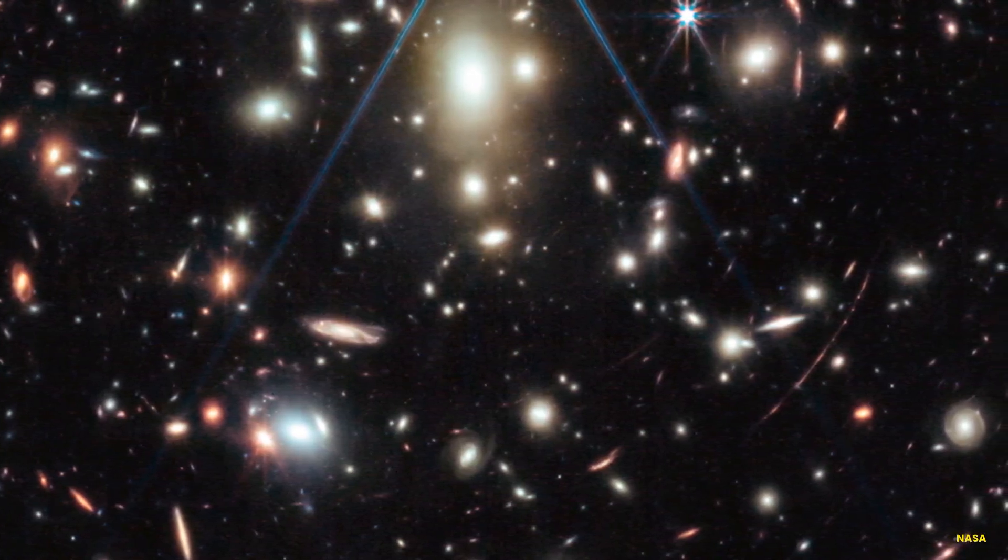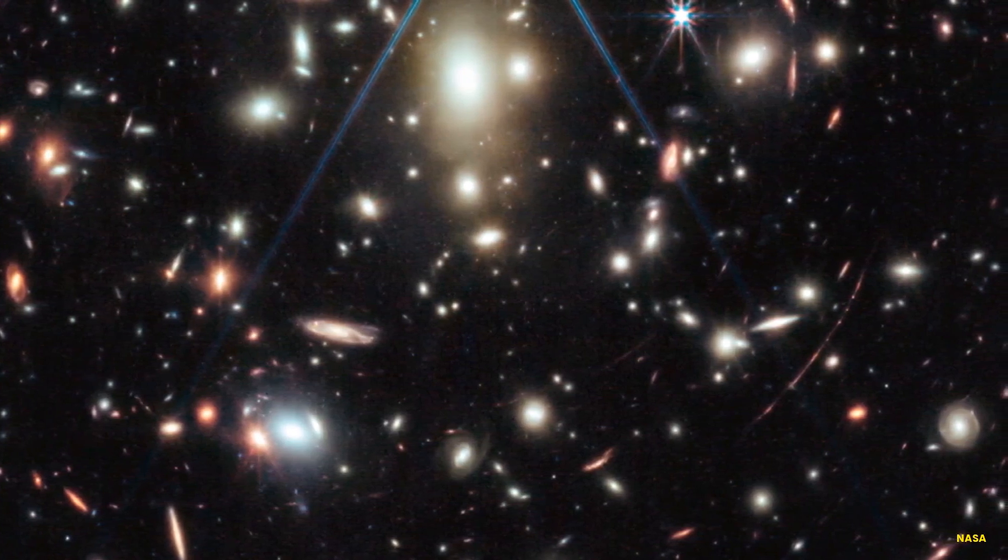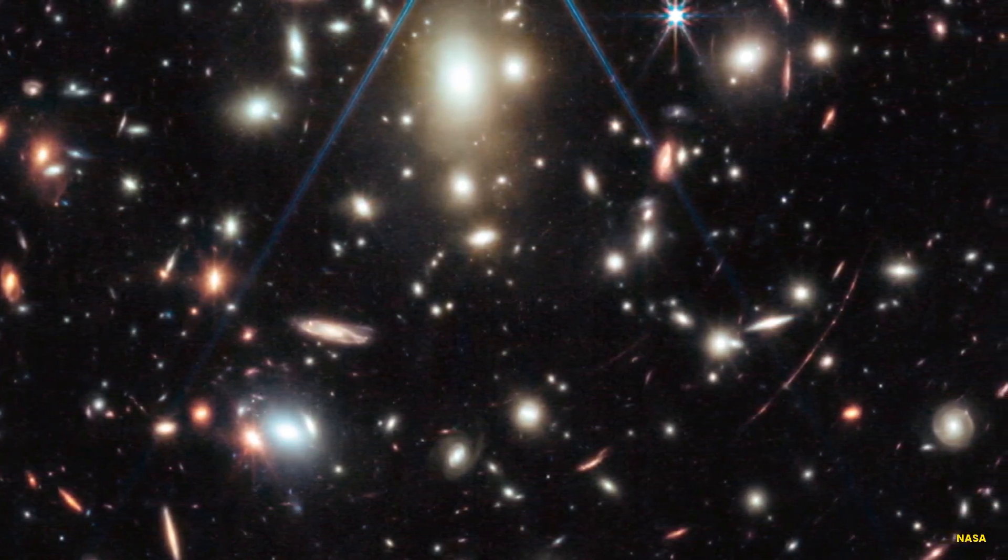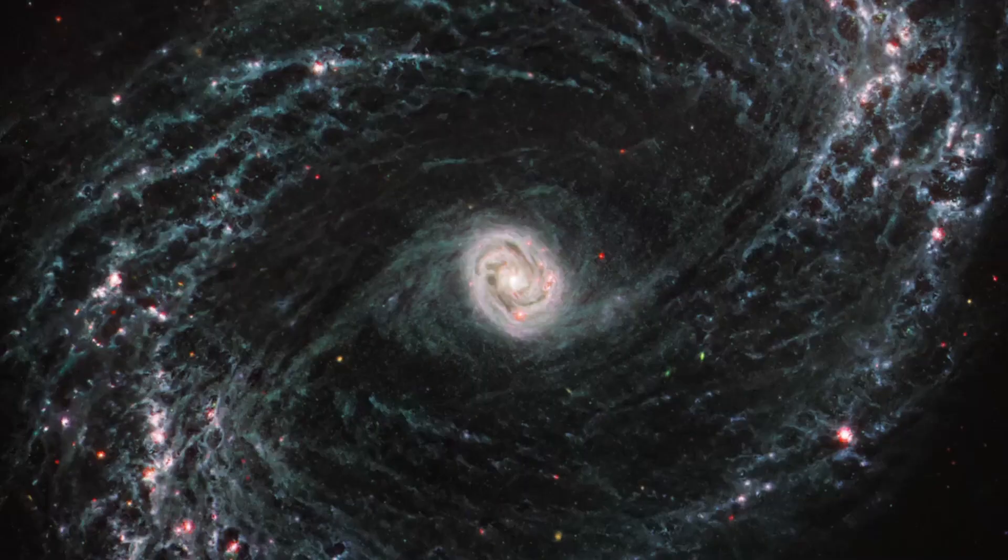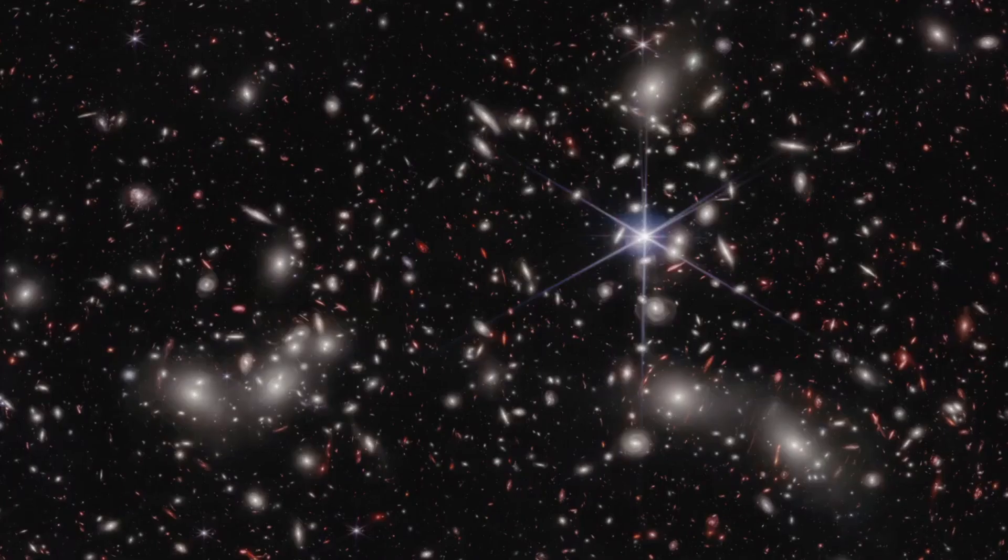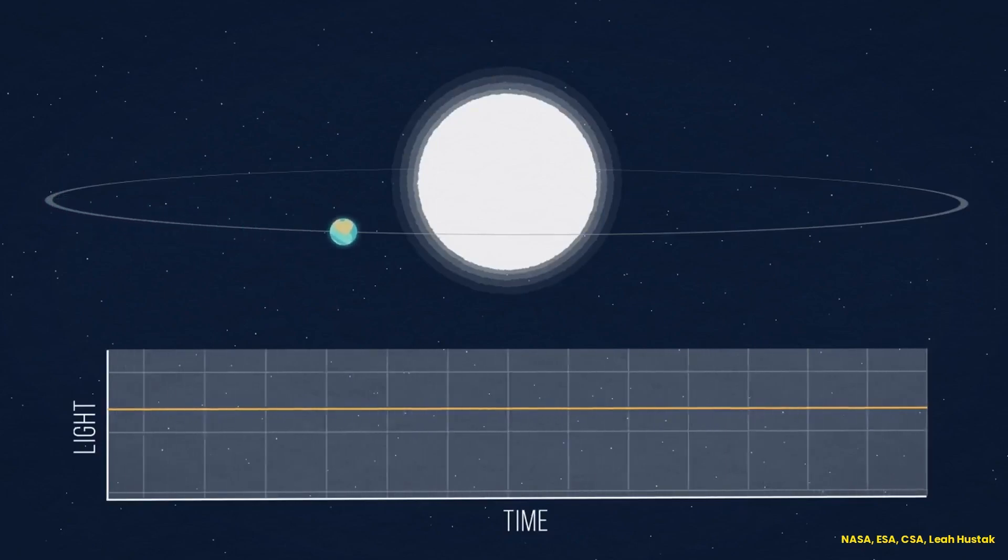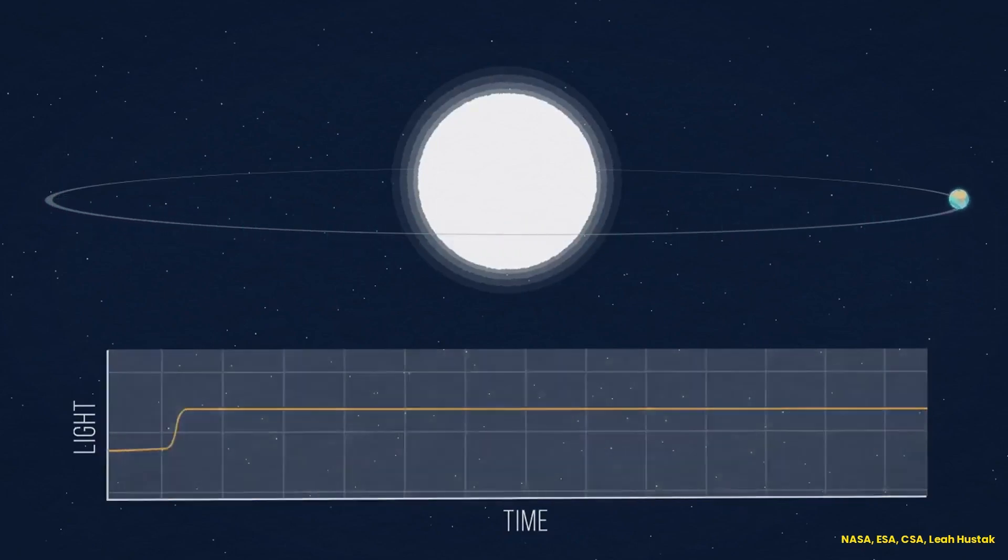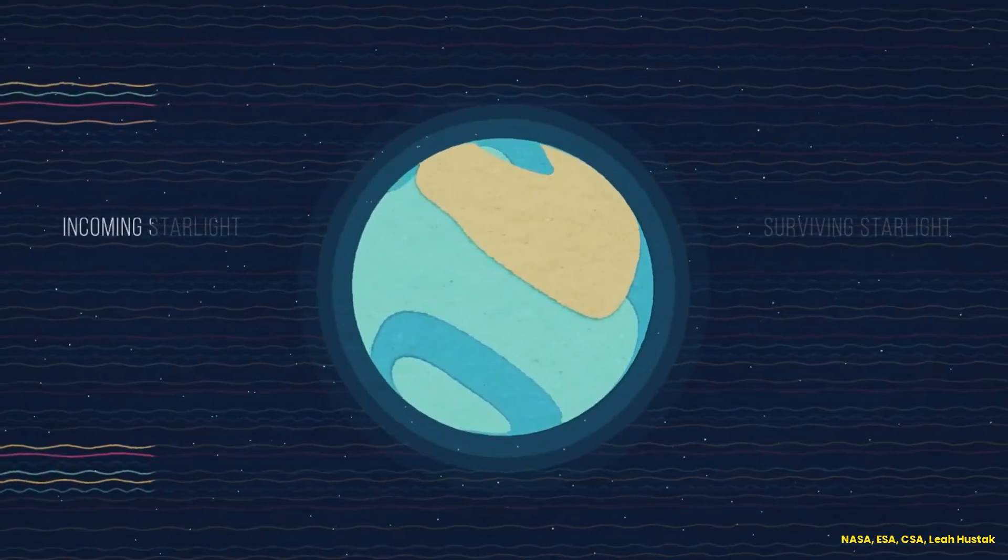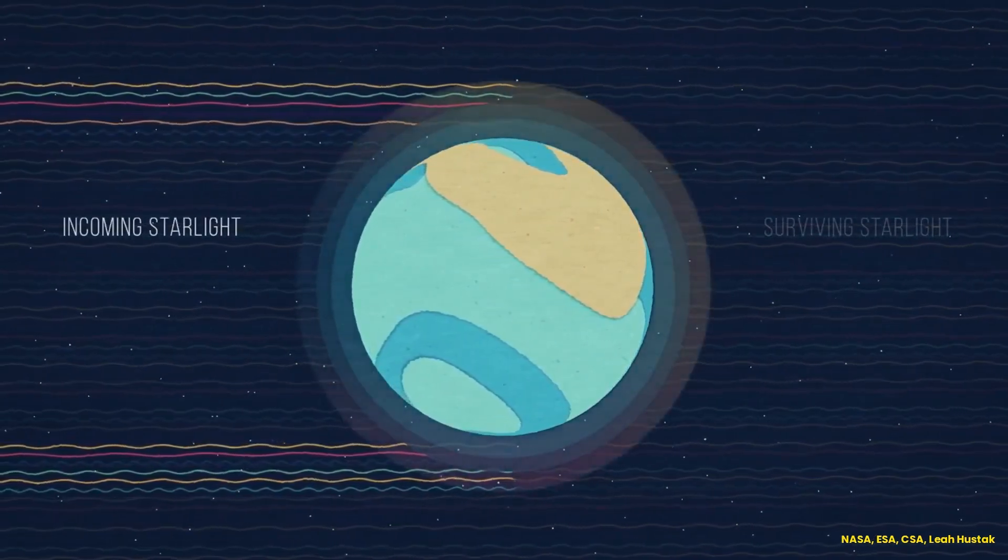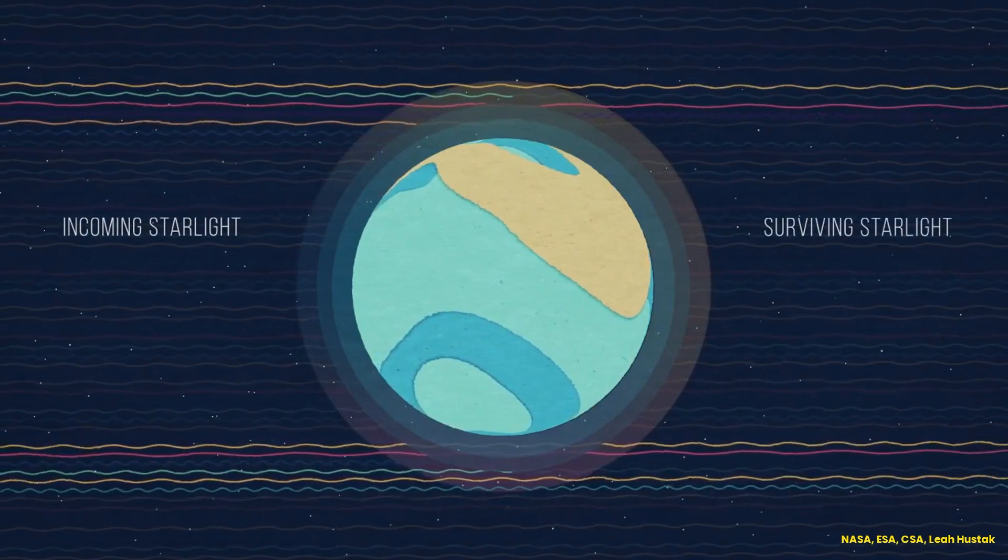These observations are already making scientists question the accepted theories on early cosmic evolution. They are illuminating how the primitive universe transformed into the grand cosmic structures we see today. Another top priority for JWST is characterizing the atmospheres of exoplanets around other stars. As planets transit in front of their stars, it will capture starlight filtered through their atmospheres.